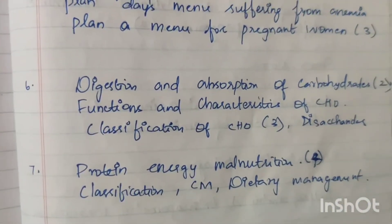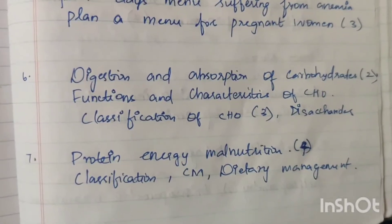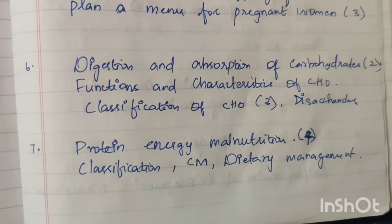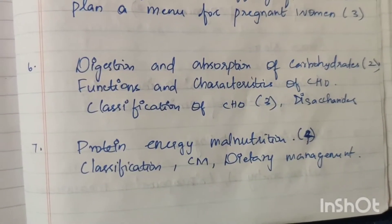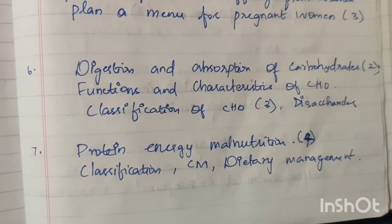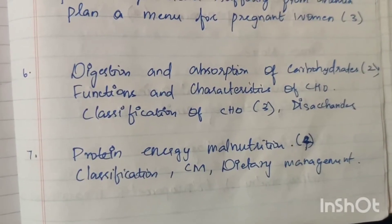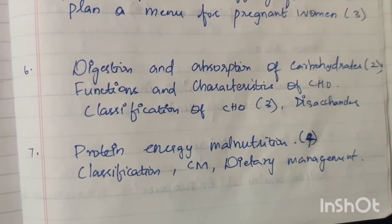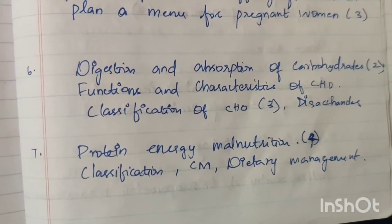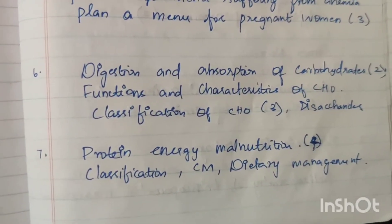Next: Carbohydrates. Digestion and absorption of carbohydrates — 2 times. Function and characteristics of carbohydrates — 1 time. Classification of carbohydrates — at 15 marks and 5 marks. Disaccharides — 1 time at 5 marks.